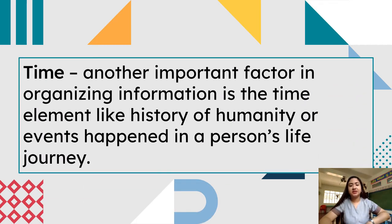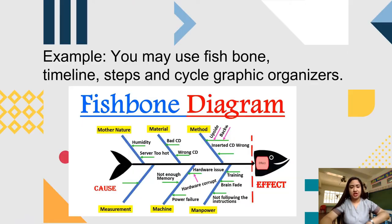When we talk about time, another important factor in organizing information is the time element, like the history of humanity, activities, or events that happen in a person's life. You can use a fishbone diagram, a timeline, steps, and cyclographic organization.